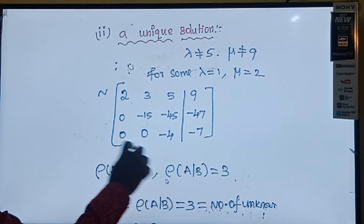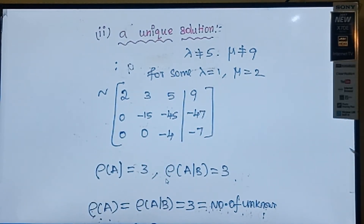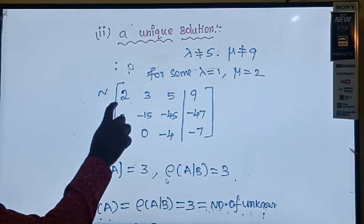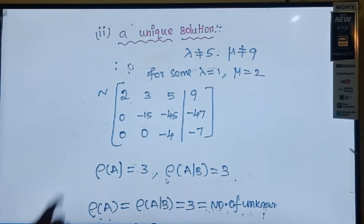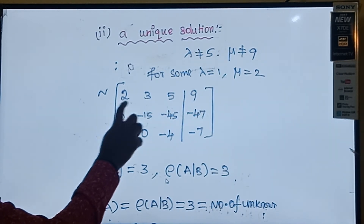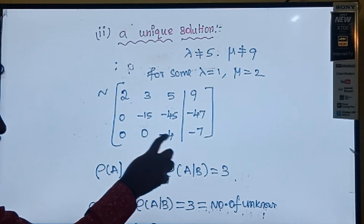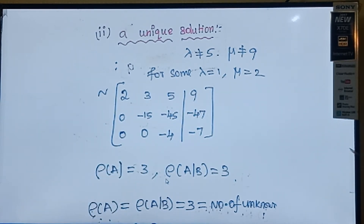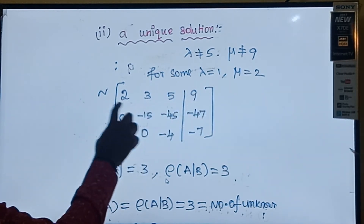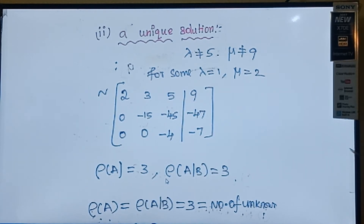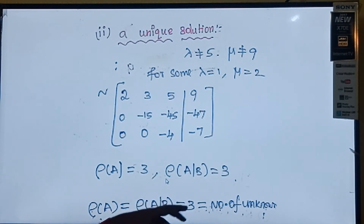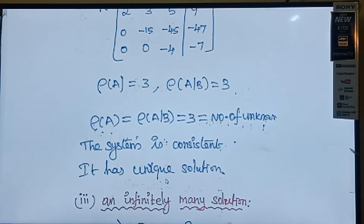This is the A matrix, and the whole augmented A|B matrix. Finding rank of A: it has 3 rows and 3 columns. All three rows are non-zero, so rank of A = 3. And rank of A|B: all three rows are also non-zero, so rank of A|B = 3. Since rank of A = rank of A|B = 3, the system has a unique solution.